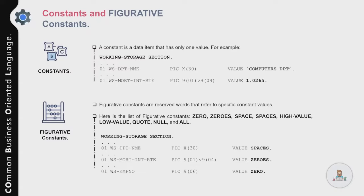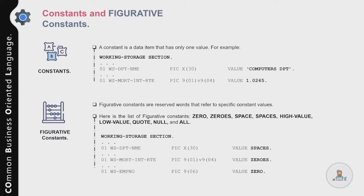You can similarly use other figurative constants such as HIGH-VALUE, LOW-VALUE, and QUOTES to initialize variables with specific values in your COBOL programs — we will showcase how to use these in coming lectures. It is always recommended to use the singular form of figurative constants — that is, ZERO, SPACE, QUOTE, HIGH-VALUE, and LOW-VALUE — to keep your code simple and consistent.